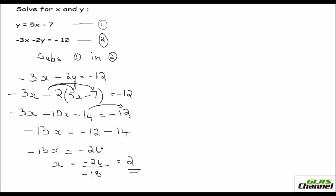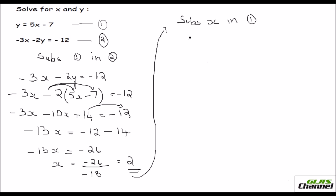Now substitute this x into equation 1 to find y. Equation 1 is y equals 5x minus 7. Plugging in x equals 2: y equals 5 times 2 minus 7, which is 10 minus 7, so y equals 3.